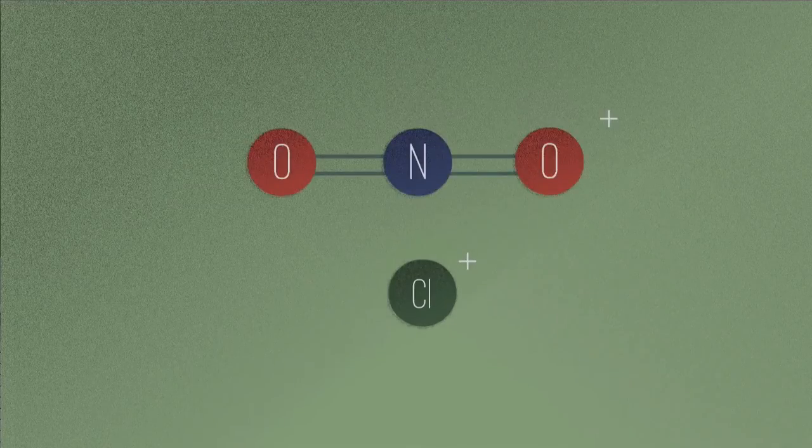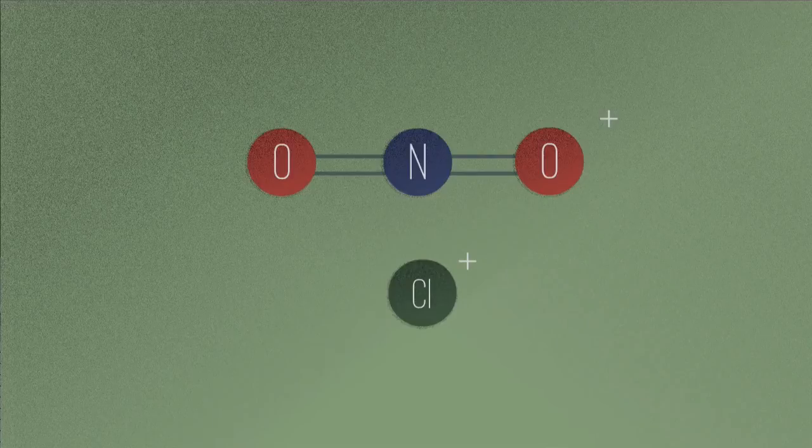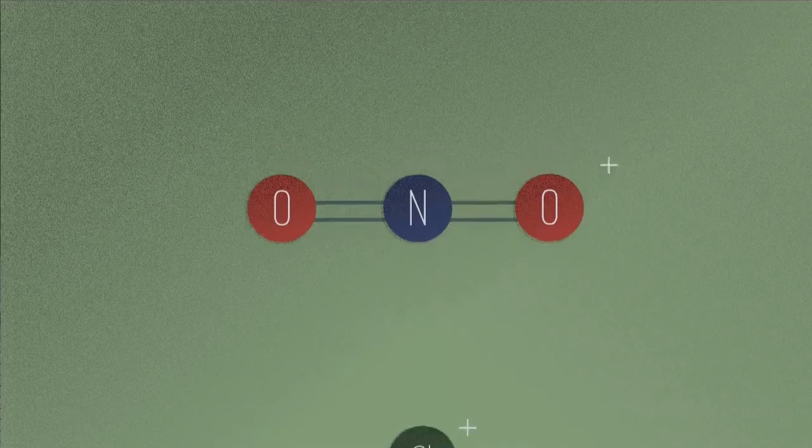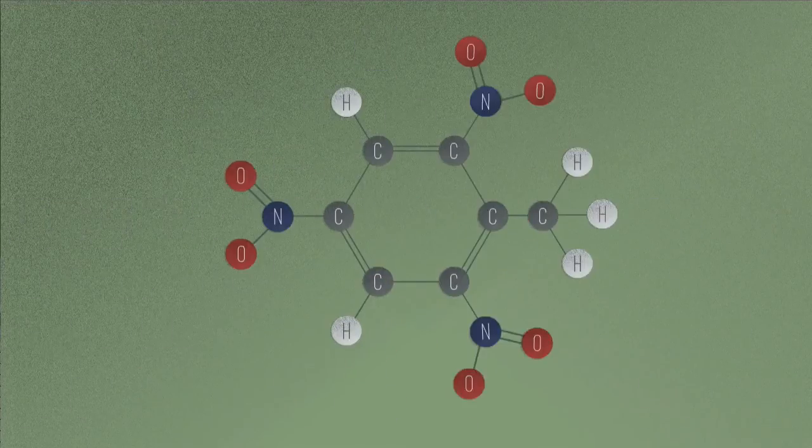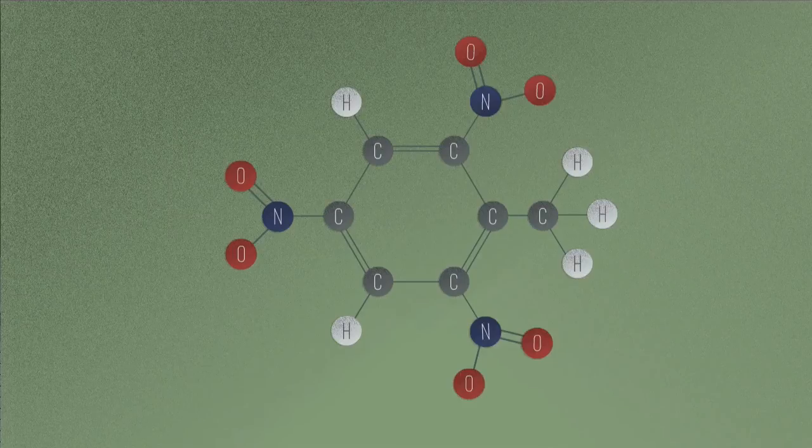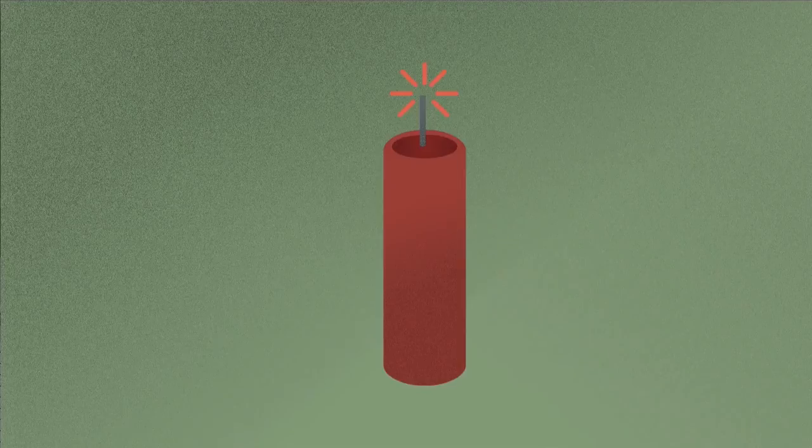For example, have you ever heard of Cl+, a cation made from a chlorine atom, or this nitronium ion, NO2+? Well, they exist and are widely used in benzene chemistry. In fact, NO2+ is reacted with benzene to form trinitrotoluene, also called dynamite, a very powerful explosive. Oh dear.